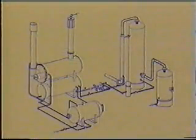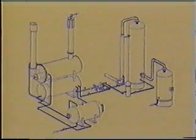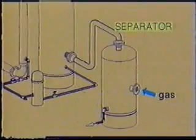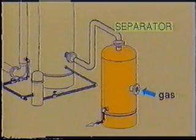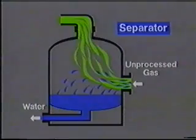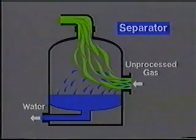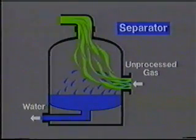The process of glycol dehydration begins when unprocessed natural gas from a well enters a device called a separator or scrubber. Here, free water is removed from the gas, leaving only gas with water vapor to flow into the contactor column.